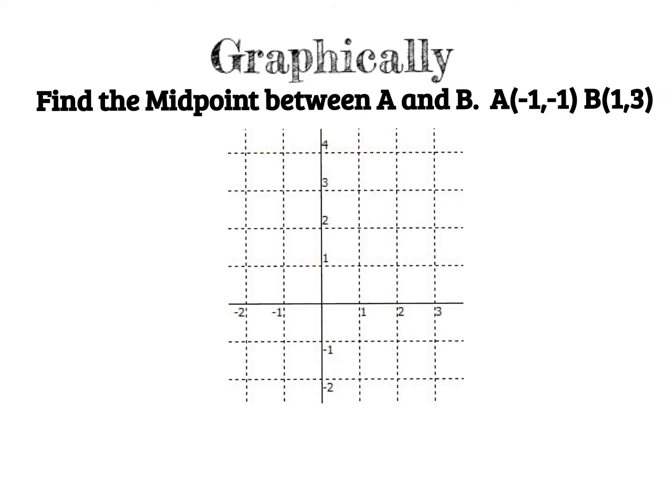So here graphically I'm going to start by graphing the points first. A is negative 1, 1. So this is going to be the value of A. B is 1 comma 3. I want to find a midpoint between these two. So it's going to be somewhere there between those two points in the middle. To do that, there's several ways. But the way that I want to show you is this.